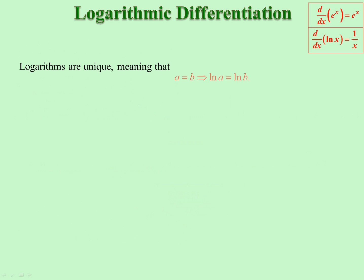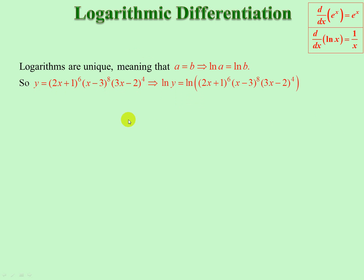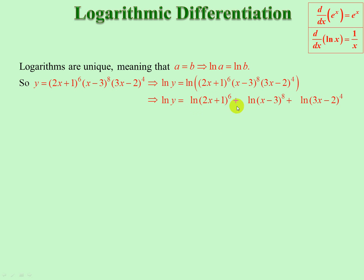Logs are unique. If a equals b, then ln a equals ln b. So if we have y equals that whole expression, then ln y equals ln of that whole expression. We can separate this out into three terms: ln y equals ln of that plus ln of that plus ln of that.